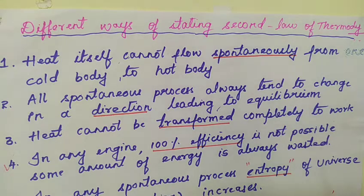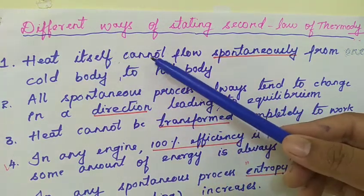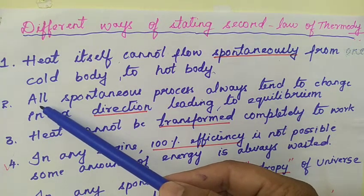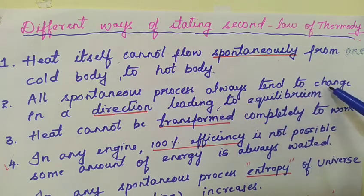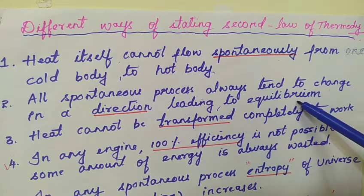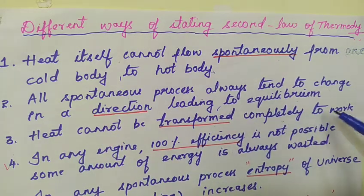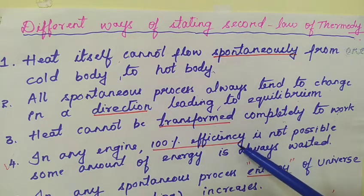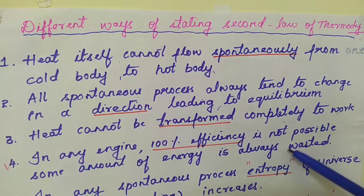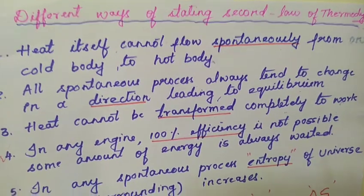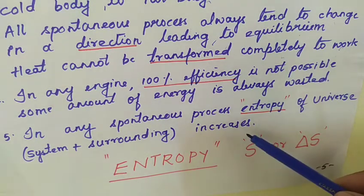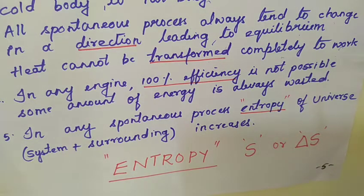The second law of thermodynamics can be proposed in many ways. There are five important ways. First: heat itself cannot flow spontaneously from a cold body to a hot body. Second: all spontaneous processes always tend to change in a direction leading to equilibrium. Third: heat cannot be transformed completely to work. Fourth — the easiest way: in any engine, 100% efficiency is not possible; some amount of energy is always wasted. Fifth: in any spontaneous process, the entropy of the universe — system plus surroundings — increases.